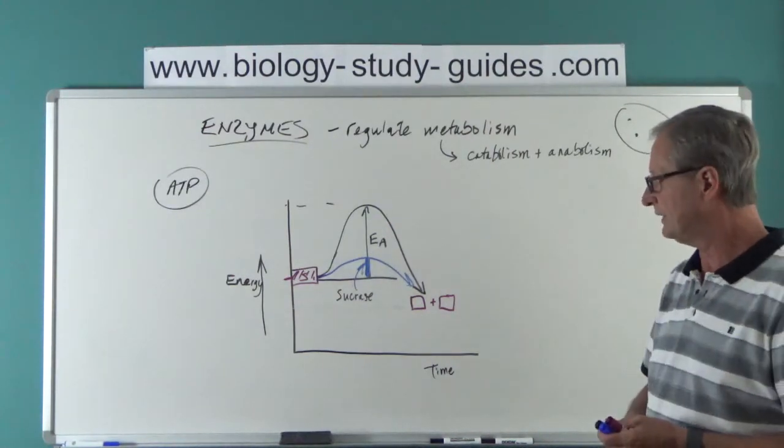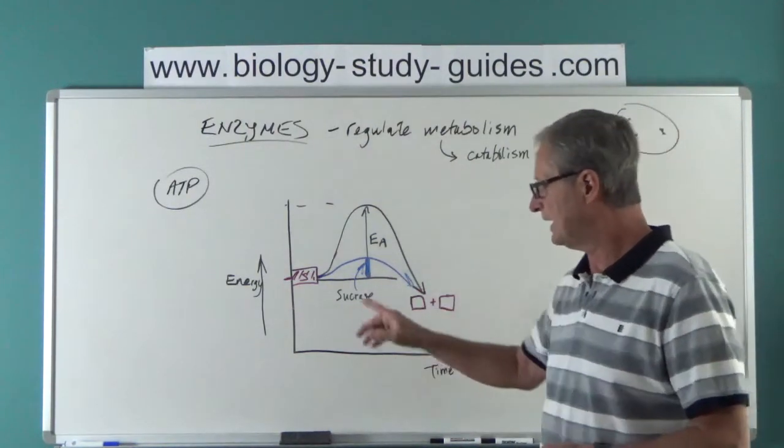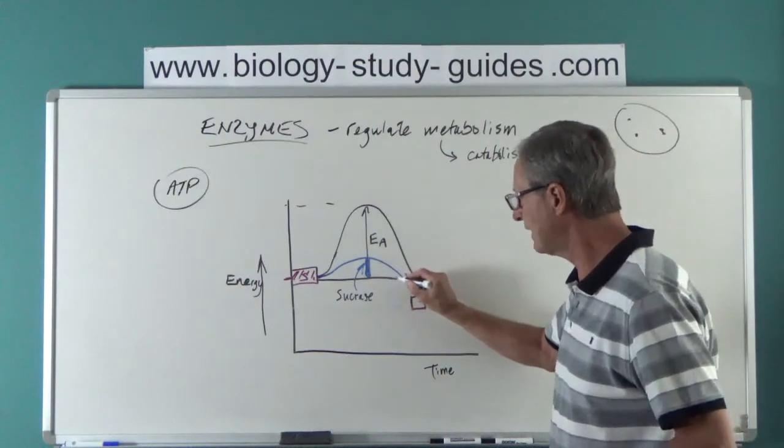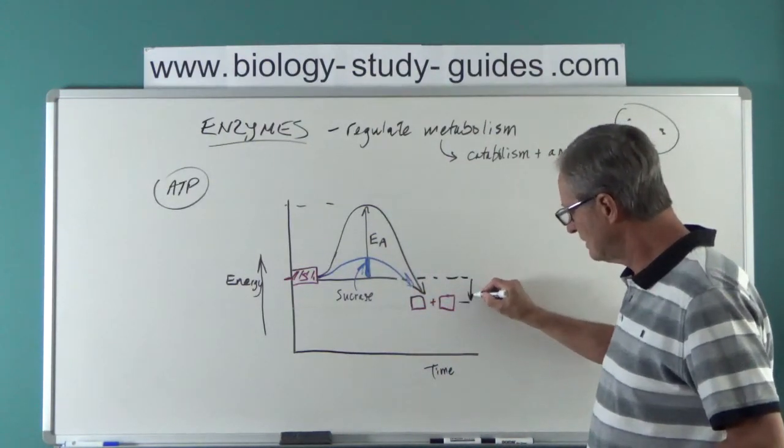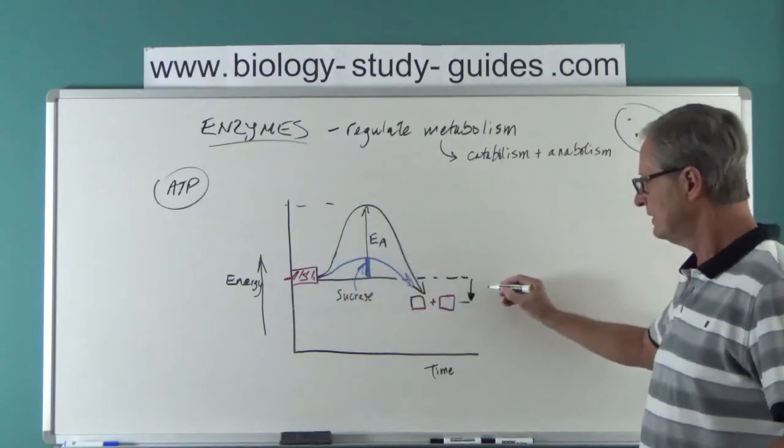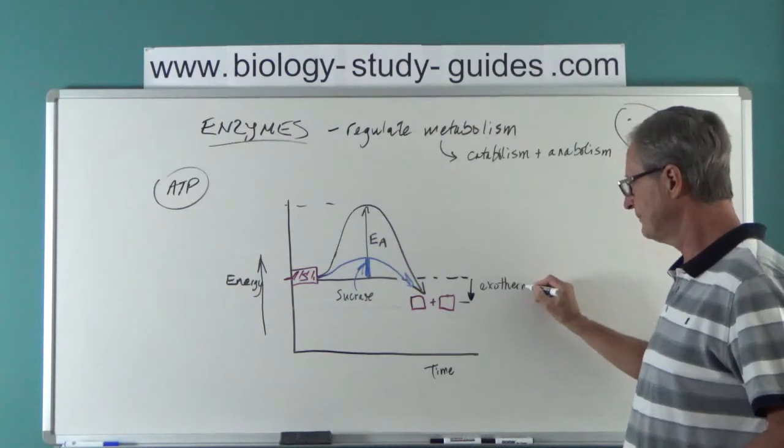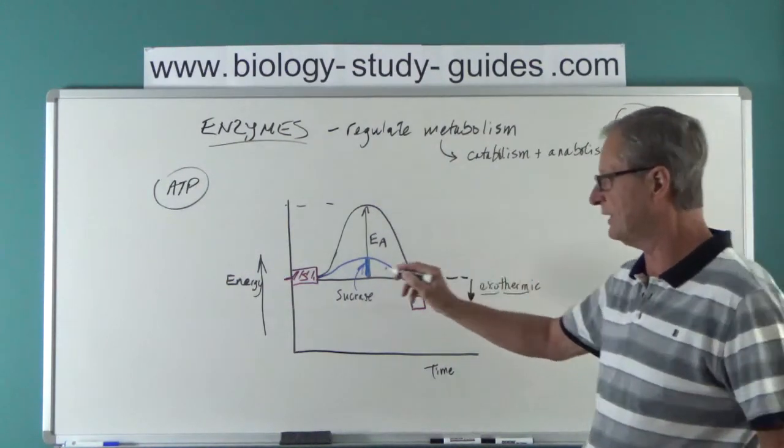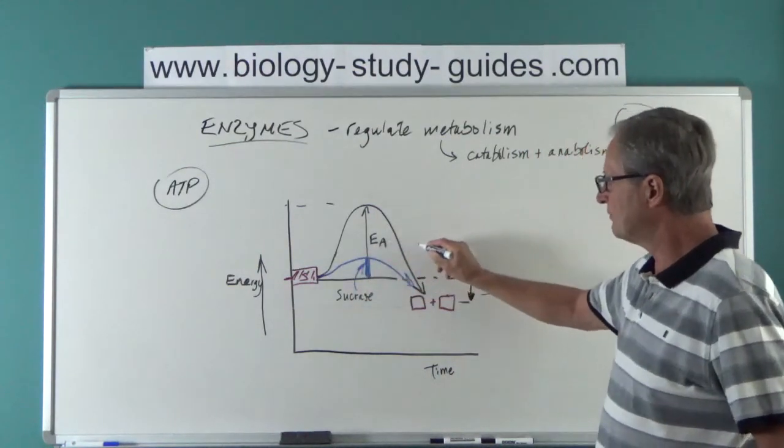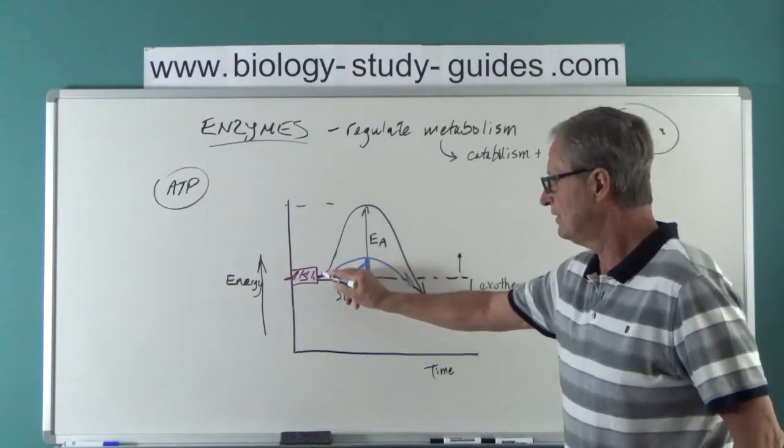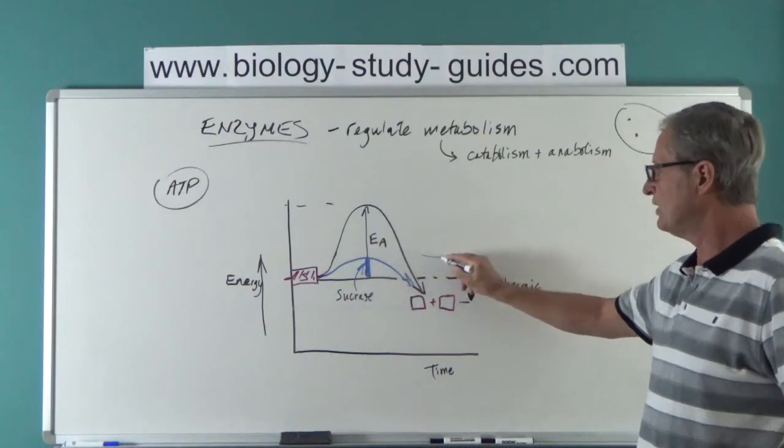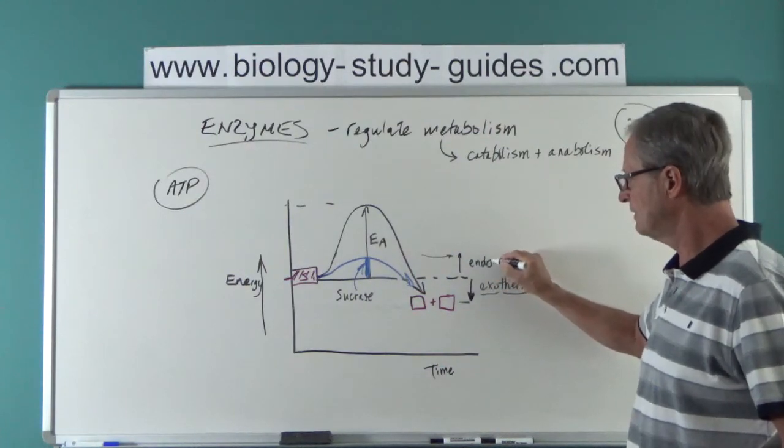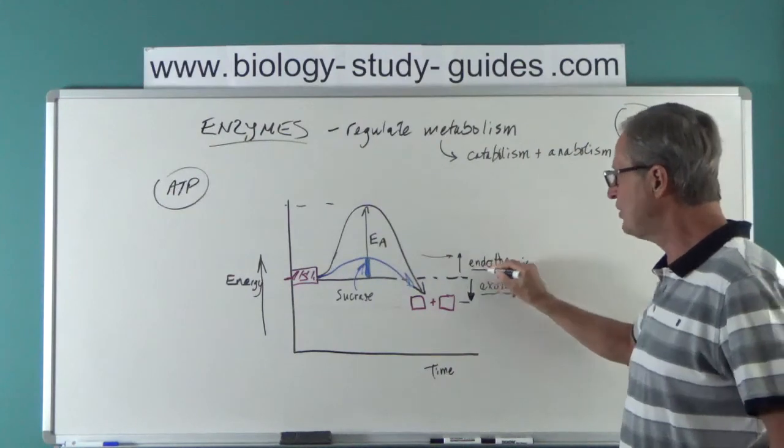One last little thing before we leave this. This type of reaction, and I use sucrose and its products as an example, but this type of a reaction - if you look at this, these things are below the original energy level - this is what we call an exothermic reaction because it gives off exo energy. It is possible, not in this particular example but in other examples, that the energy level of the products is actually higher than the original energy. So the energy of activation would come in and you'd wind up with a product existing at this level. Those ones take in energy overall and they're called endothermic reactions.